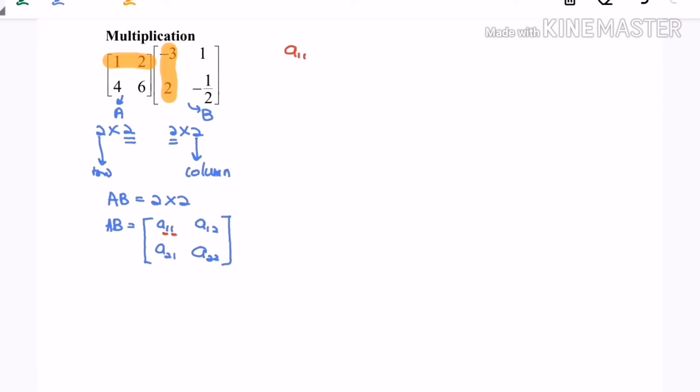So A11 will be 1 multiplied by negative 3 plus 2 multiplied by 2. That is A11.